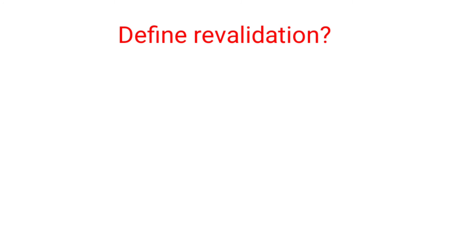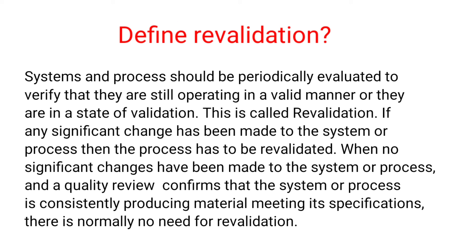Define Revalidation. Systems and processes should be periodically evaluated to verify that they are still operating in a valid manner, or they are in a state of validation. This is called Revalidation. If any significant change has been made to the system or process, then the process has to be revalidated. When no significant changes have been made to the system or process and a quality review confirms that the system or process is consistently producing material meeting its specifications, there is normally no need for revalidation.